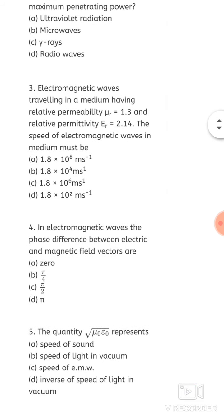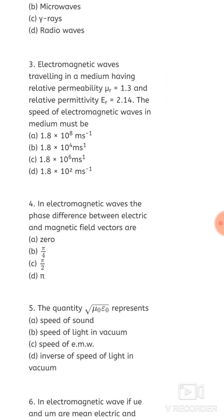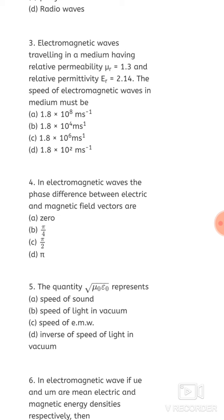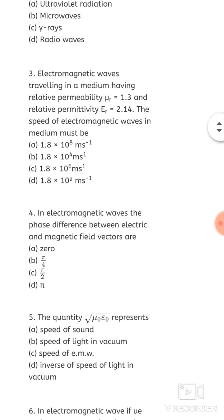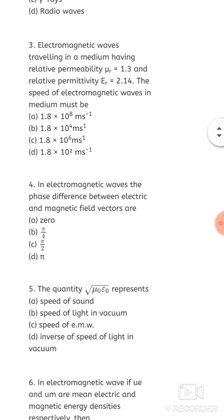Next question: electromagnetic waves are traveling in a medium having relative permeability μr = 1.3 and relative permittivity εr = 2.14. The speed of EM waves in the medium must be — this is a relation between permeability, permittivity, and speed of light. The relation is: speed of light c = 1 / √(μ₀ε₀). Here we have relative permeability and relative permittivity, so you have to use the converted formula. Do the calculation yourself and choose the correct option.